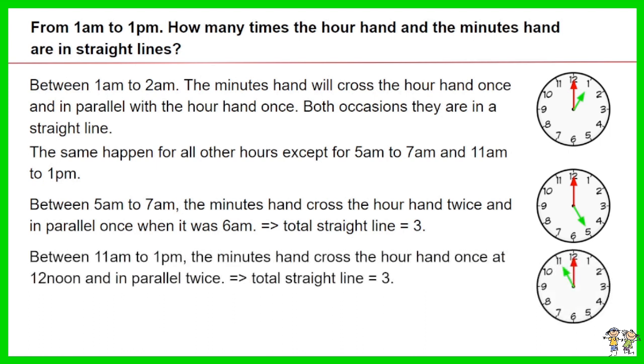Between 11am to 1pm, the minutes hand cross the hour hand once at 12 noon and in parallel twice. Thus total straight line equals 3.